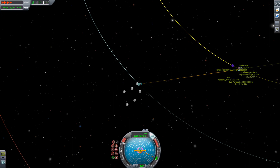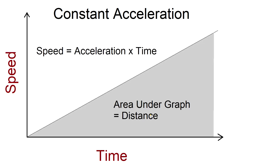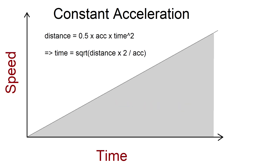We can use the magic of physics and graphs to figure out how long this takes. This graph shows that with constant acceleration, our speed increases and the area under the curve actually corresponds to the distance traveled. The area under a triangle is simple — it's the base times the height divided by two. The height is equal to the acceleration times the time, which means your distance is one half times the acceleration times the time squared. You can invert that to find that the time to get to the target with constant acceleration is the square root of the distance times two divided by the acceleration.